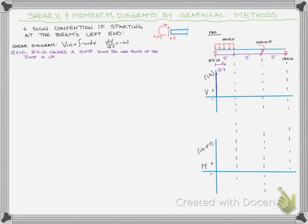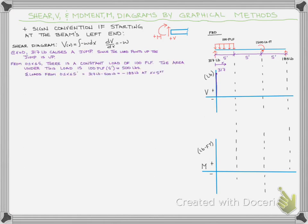Now we want to look at what's happening as we move along the beam. The easiest way to do this is again looking at discontinuities in the load, like we did for the equation method. We have a continuous load from zero to five feet that we can find the area under. The shear is just summing up all of the load effects. So from zero to five feet, we have 100 times 5, that's our area or 500.